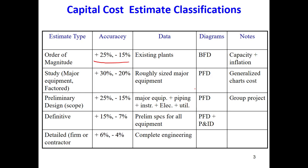We can go into a bit more detail by using the PFD, the process flow diagram, and doing sizing for major equipment such as reactors and distillation columns — just rough sizing, not exact. This gives us an accuracy of minus 20 to plus 30 percent of the final actual capital investment. For this, we use generalized chart costs that we will discuss later in this unit.